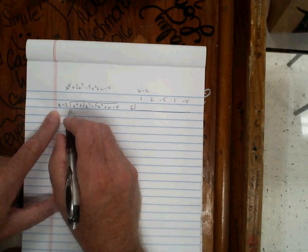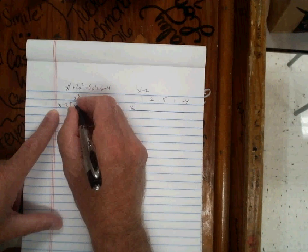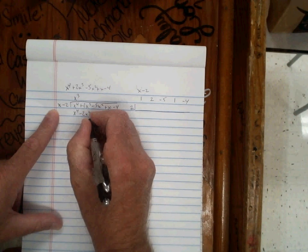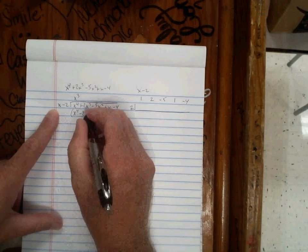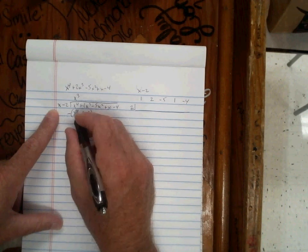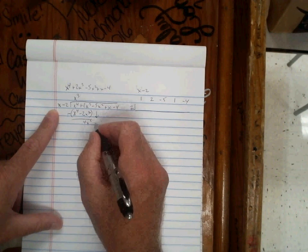If we do this long division, we ask ourselves what times x goes into x to the 4th? That's x cubed. We multiply times what's on the outside. We get x to the 4th minus 2x cubed. Then x to the 4th minus x to the 4th cancels. 2x cubed minus 2x cubed gives us 4x cubed. Bring down the negative 5x squared.